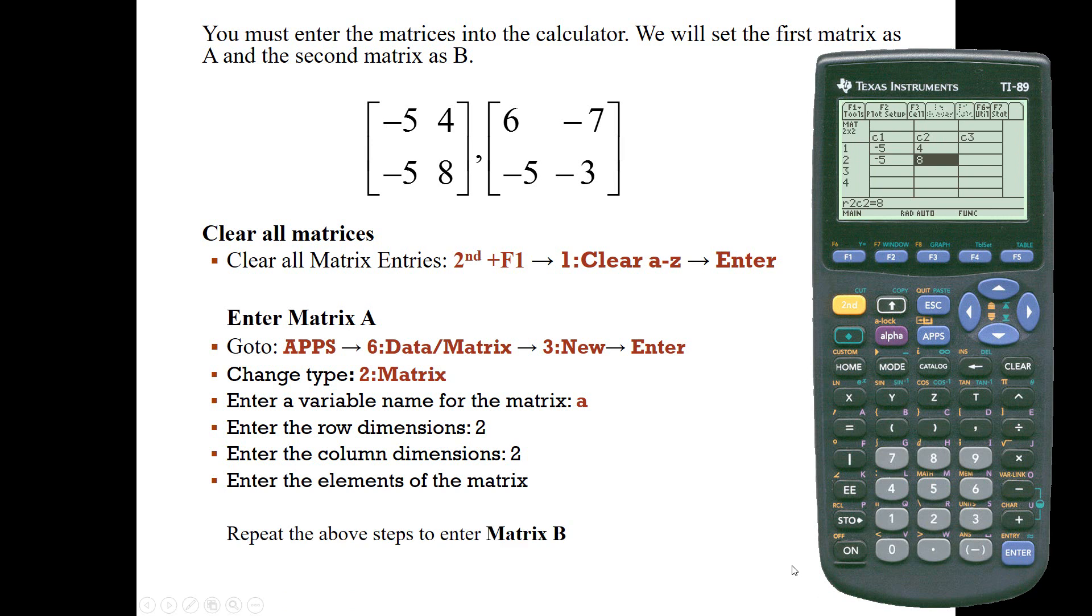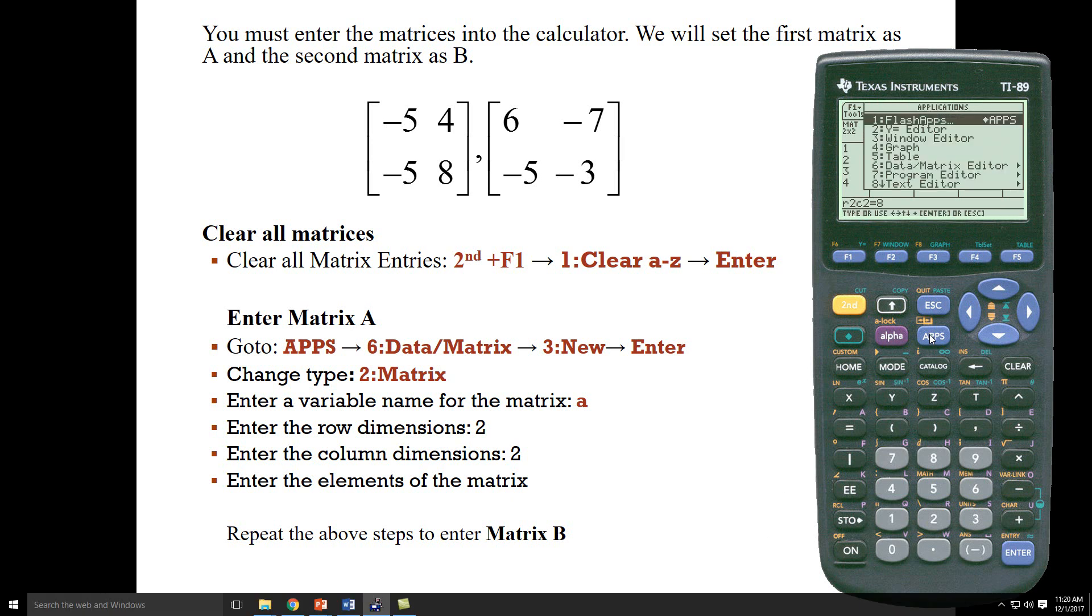I'll repeat the above steps to enter matrix B. I'll go back into apps. I'll scroll down to data matrix editor. I'm going to create a new matrix. I'm going to change my type to matrix. I'm going to keep my folder as main.